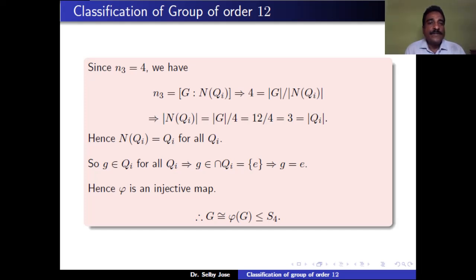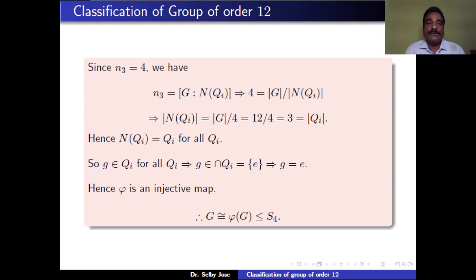Since |N(Qᵢ)| = |Qᵢ| and Qᵢ is a subgroup of N(Qᵢ), we have N(Qᵢ) = Qᵢ for all i. This means g belongs to Qᵢ for all i, so g belongs to ∩Qᵢ. But the intersection of all Sylow 3-subgroups is {e}, so g = e. Therefore the kernel of φ is trivial, meaning φ is injective.